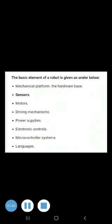The basic elements of a robot are: mechanical platform (the hardware base), sensors, motors, driving mechanisms, power supplies, electronic controls, microcontroller systems, and languages.